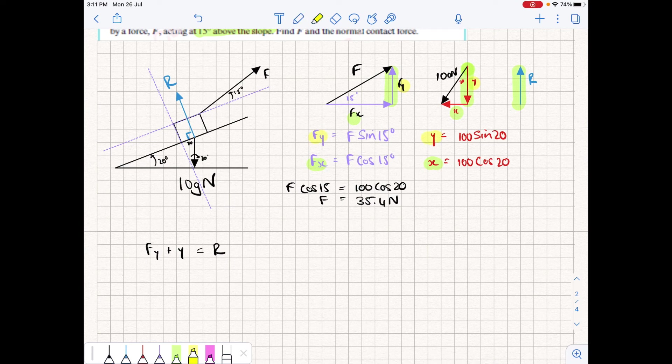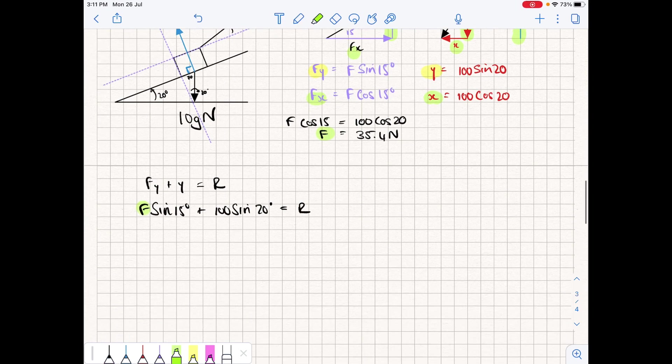We have already solved what these two are, and so I can just put them into my equation. F sine 15 degrees plus 100 sine 20 degrees must be equal to force R. We have solved for F in the previous step, so we can substitute that in as 35.4 sine 15 plus 100 sine 20 is equal to R. And obviously, this number here, you will use your exact answer, so save it in the memory function if you need to. When we're working with trig, remember, even the smallest change in decimal can make a big difference when you're solving the problem. From here, we're just going to put both of these into the calculator at the same time, and we'll get R equal to 84.8 Newtons.